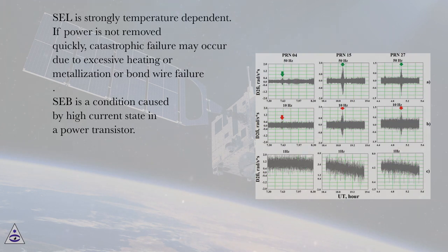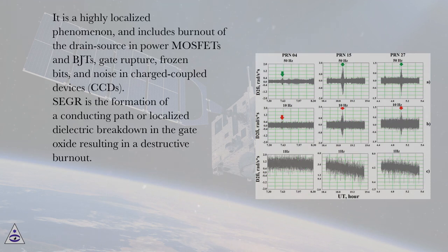SEB is a condition caused by high current state in a power transistor. It is a highly localized phenomenon and includes burnout of the drain source in power MOSFETs and BJTs, gate rupture, frozen bits, and noise in charge-coupled devices (CCDs).